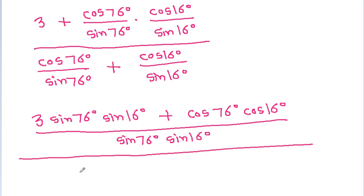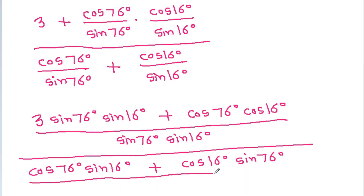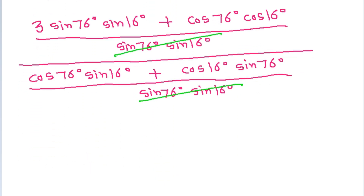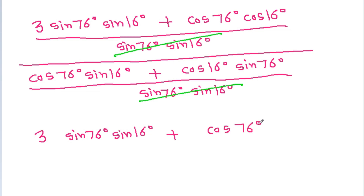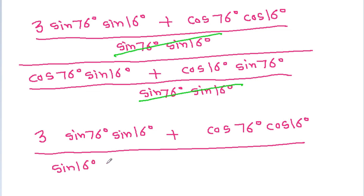Divided by cos 76 degree sin 16 degree plus cos 16 degree sin 76 degree, times cos 76 degree by sin 16 degree, by sin 76 degree by sin 16 degree — and this will get cancelled. Leaving cos 16 degree by sin 16 degree by sin 16 degree plus cos 76 degree cos 16 degree by sin 16 degree.